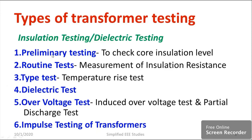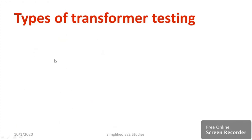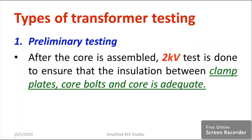Let me move on to preliminary testing. Once the core is assembled in the transformer, you need to apply 2 kV of test voltage. Why? You need to make sure that the insulation between clamp plates, core bolts, and the core part is adequate or not.